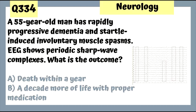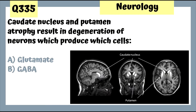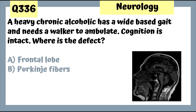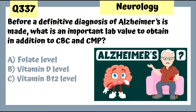Question 334: A 55-year-old man with rapidly progressive dementia and startle-induced involuntary muscle spasm; EEG shows periodic sharp wave complexes — the outcome is death within a year. This is Creutzfeldt-Jakob disease. Question 335: Caudate nucleus and putamen degeneration resulting in loss of GABA-producing neurons — this is Huntington's disease.